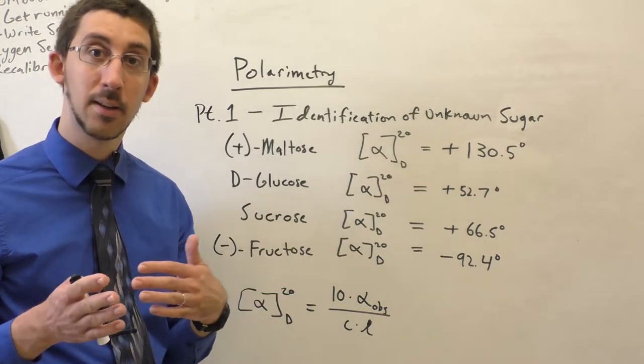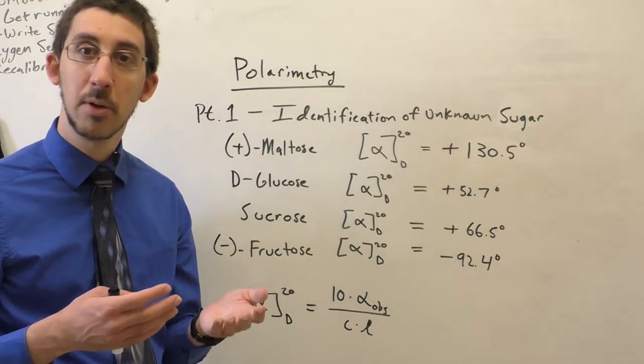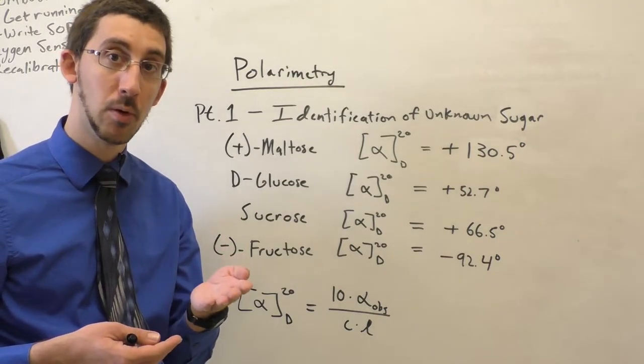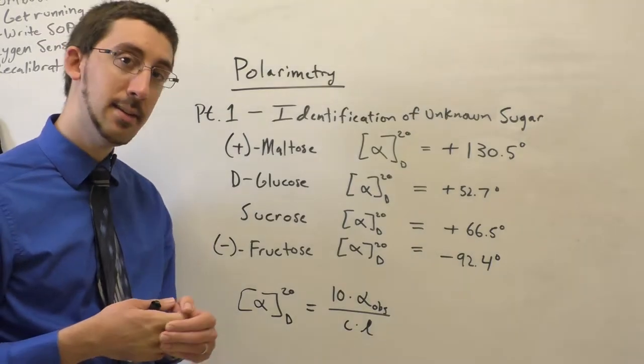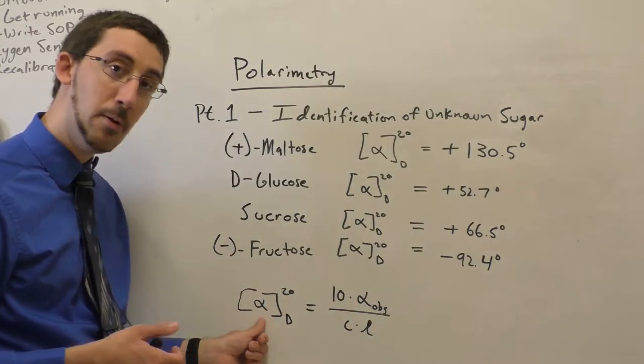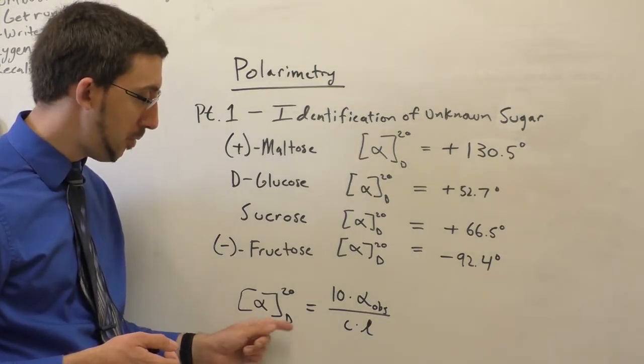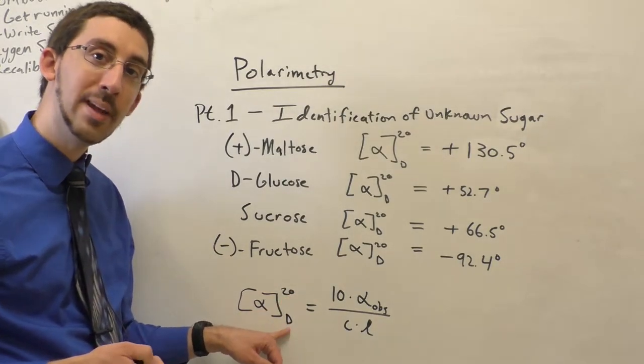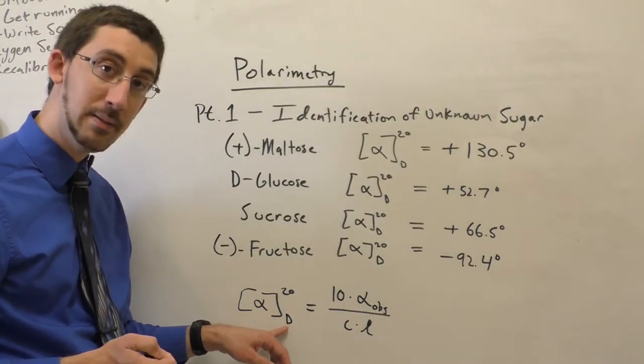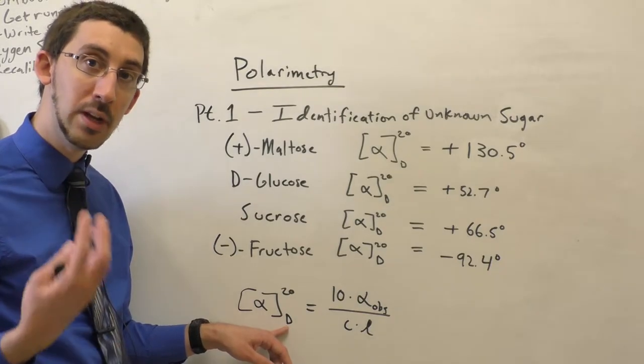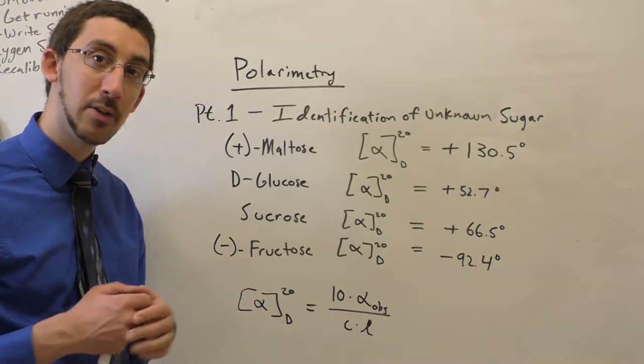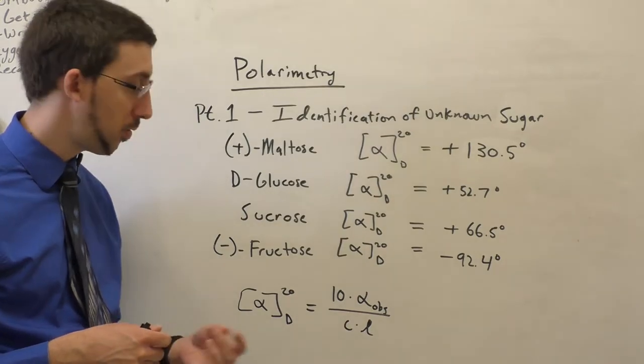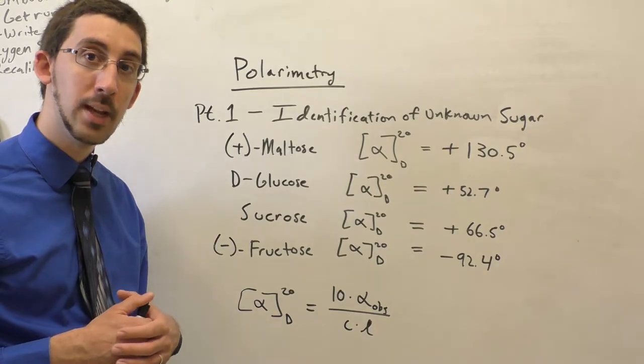Temperature can also affect the amount of rotation to some degree. And it's also important to note the wavelength of light that we are using for that plane polarized light. And so we define something known as the specific rotation, which is alpha in brackets. In superscript we put the temperature that the measurement is recorded at. And in subscript we place the wavelength of light that is used. Now D isn't a wavelength, but D refers to deuterium. And the deuterium line spectrum has a line at 589 nanometers, which is most commonly used for these measurements.